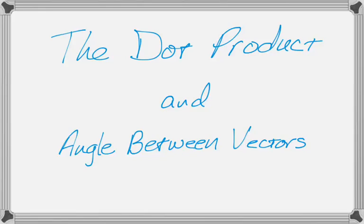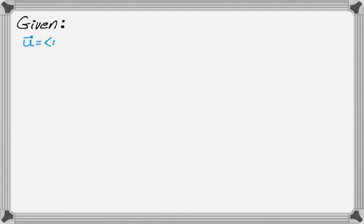In this video we are going to talk about the dot product and the relationship to the angle between two vectors. To do that, we're going to need to be given two things: a vector u, which has components u1 and u2, and a vector v that has components v1 and v2.